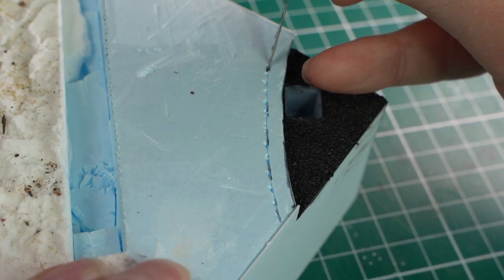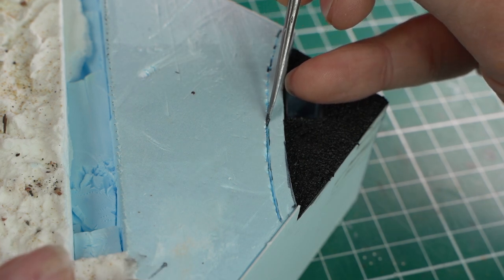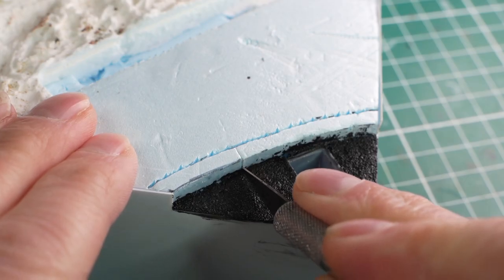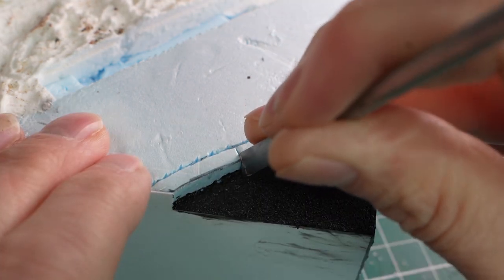PU is such a nice material to carve in. Look how easy it is to make these curbs. Believe me with a little battering and some paint they will look really convincing.